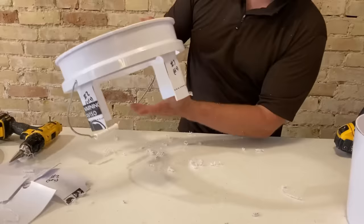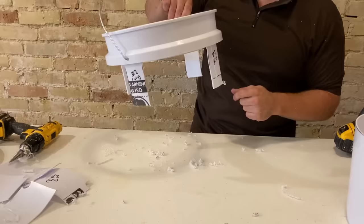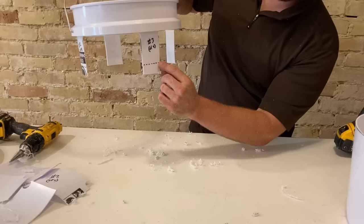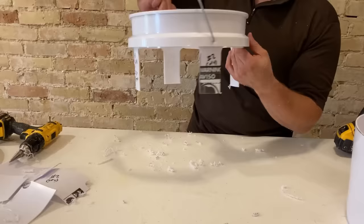This leaves us with our top pail essentially having four legs that we're going to use to support it on top of the middle pail. As you can see, I've also drawn a dotted line one inch up from the bottom on each of the legs. That's going to help us position it later as we go ahead and mount it onto the middle pail.